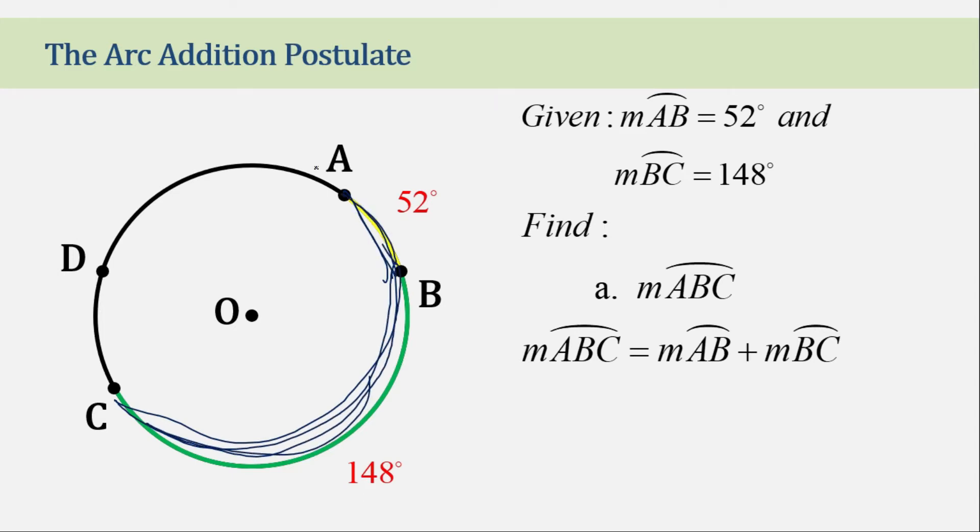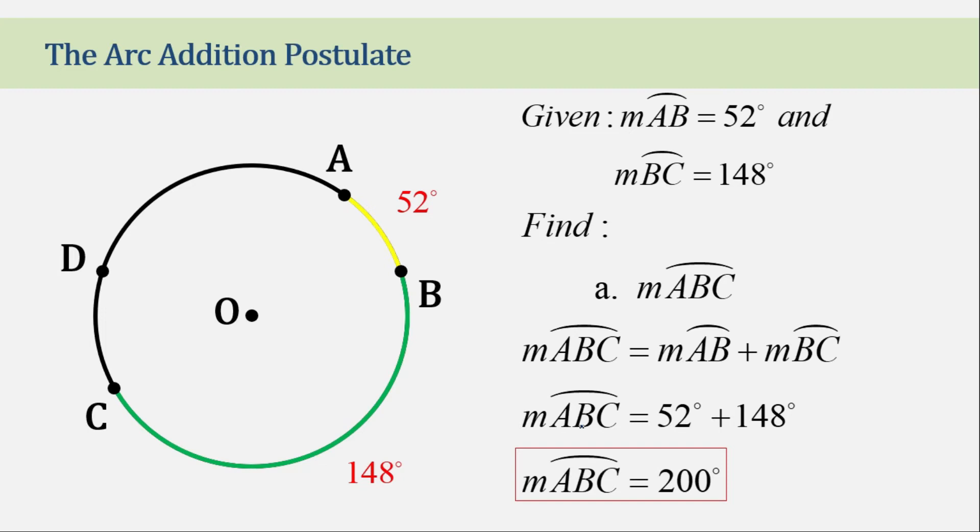So that's why we could use the arc addition postulate here. So let's plug in the given. We have 52 degrees for AB and 148 degrees for BC. So if we add them together, we have the measurement of 200 degrees for arc ABC.